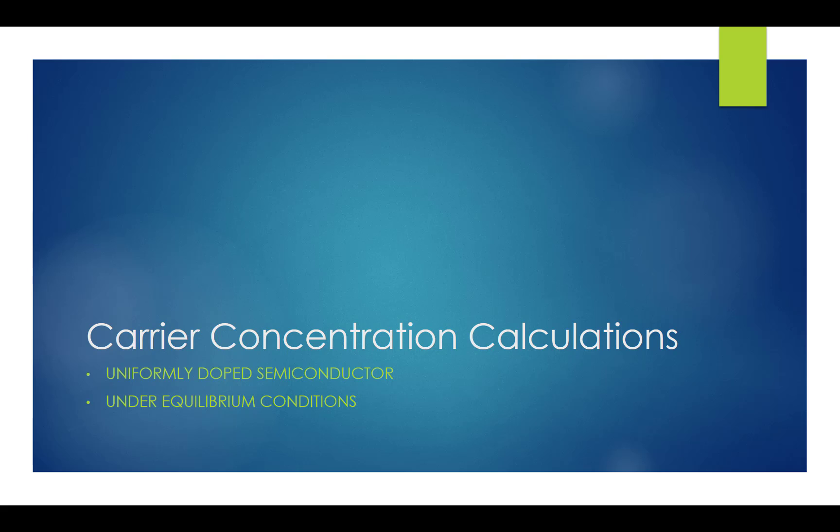In this calculation, we assume the semiconductor is non-degenerate, so that we can use the n times p equals ni squared relationship, and total ionization of the dopant sites.